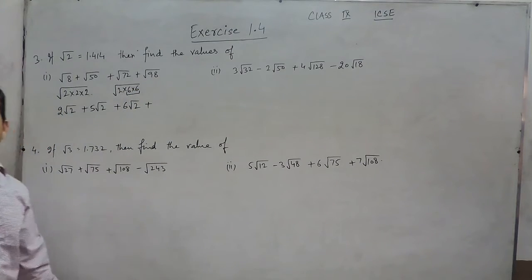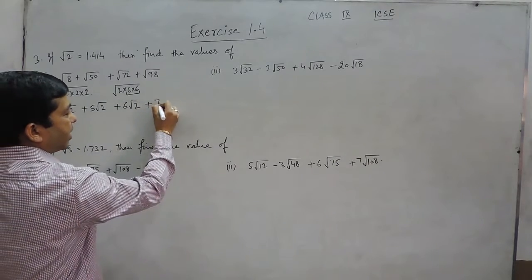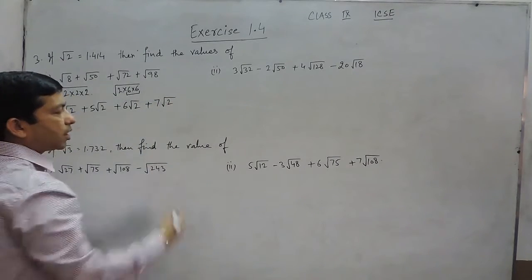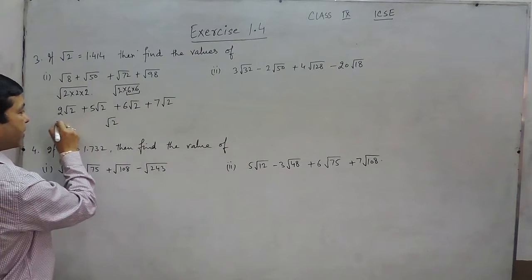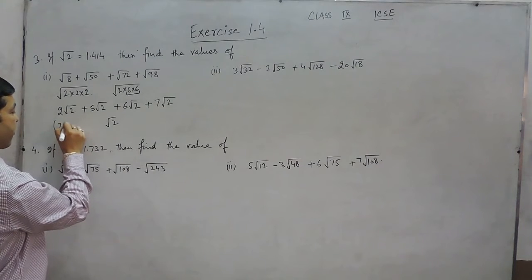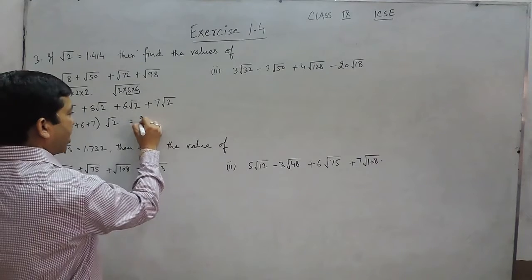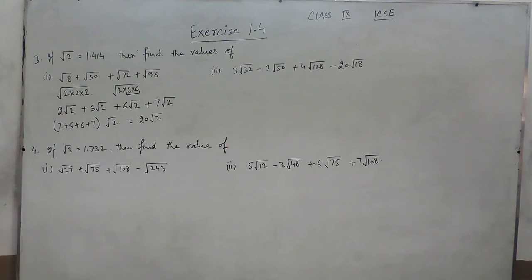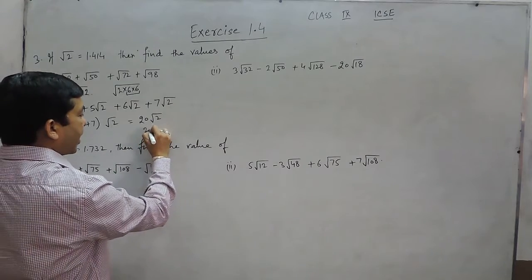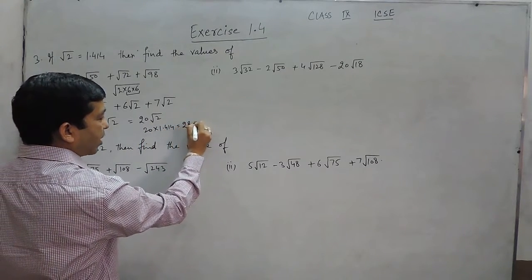Same way in 98, if I take √2 common then 49 will remain, and 49 is the perfect square with value 7. Out of all the values we can take √2 common, so 2 + 5 + 6 + 7 comes out to be 20√2. We know the value of √2 as 1.414, so this is 20 × 1.414 which is 28.28.